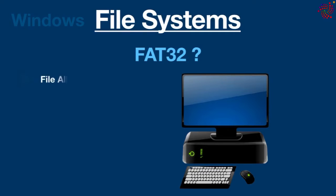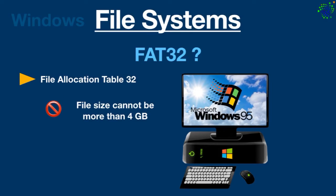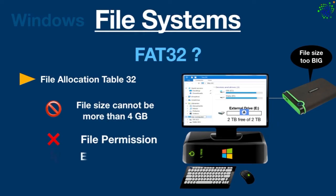FAT32 stands for File Allocation Table 32. It was introduced by Microsoft in 1997 with Windows 95. FAT32 is compatible with any device as long as it has a USB port, and is considered well suited for USB devices and hard drives. However, it comes with certain limitations. One limitation is that file size cannot be more than 4GB. Another limitation is security and encryption — FAT32 does not support file permissions, encryption, and compression. These limitations are acceptable for external storage devices but are problematic for internal devices, so users should move on to newer file systems like exFAT and NTFS.